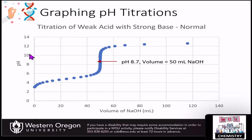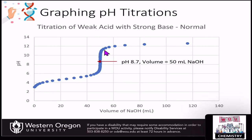We see the pH changing over time as we add the volume of the base, starting out at the acidic side. We reach that pH which is the equivalency point, where the moles of the base are going to be equivalent to the moles of the acid. The addition of more sodium hydroxide at that time is going to result in that increase in the pH up to the basic level. This is a normal graph, and oftentimes we'll be able to identify the equivalency point from this type of graph.